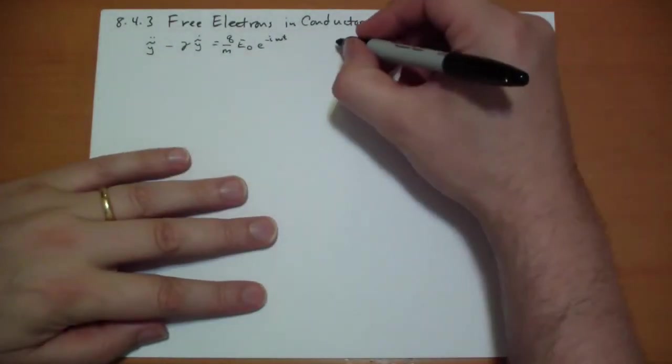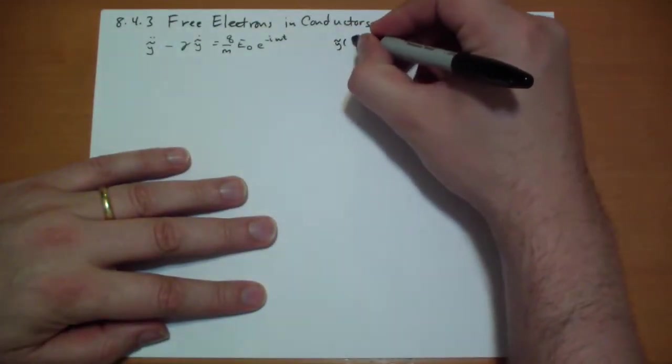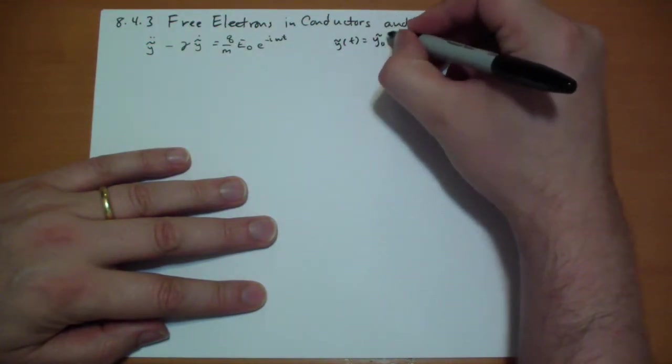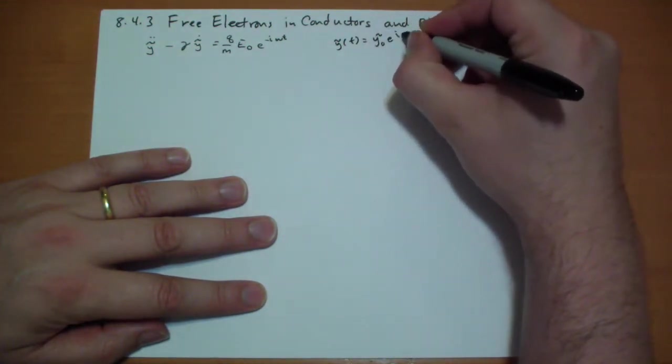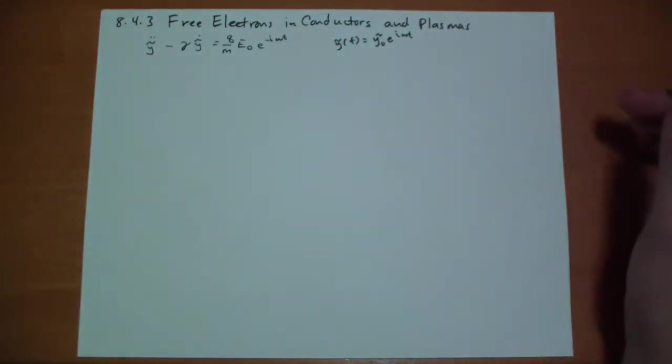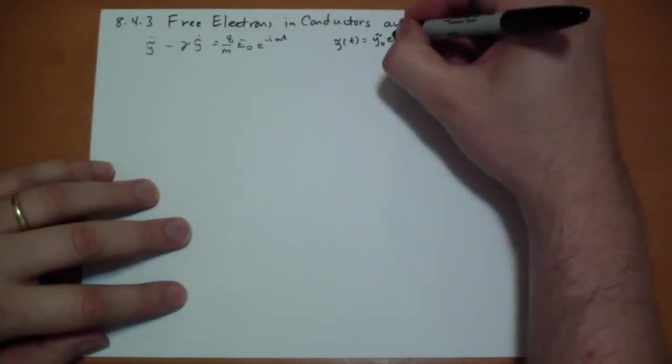A single dot has to equal the acceleration divided by the mass of the electron. So charge of the electron divided by the mass of the electron times the electric field that's driving the whole thing, e to the minus i omega t.